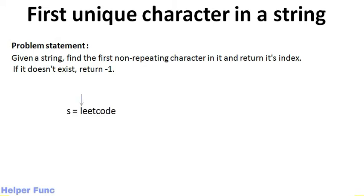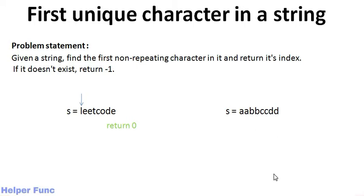For this example, L appears only one time, thus it is unique and we will return its index as our answer. But for this other example, as we can see, no character is unique, thus we will return minus 1 for this string.